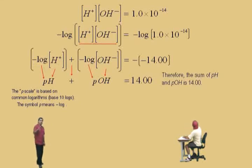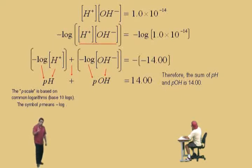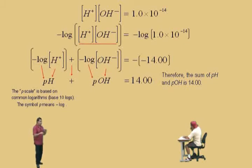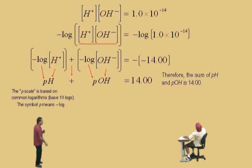Notice we write 14.00 because of significant figures. Whenever you do a logarithmic calculation, our ion product constant is 1.0 times 10⁻¹⁴, which has two significant figures. When you take the log of a number with two significant figures, you must have two decimal places. That's why we write the sum as 14.00 — to stay in tune with significant figures.